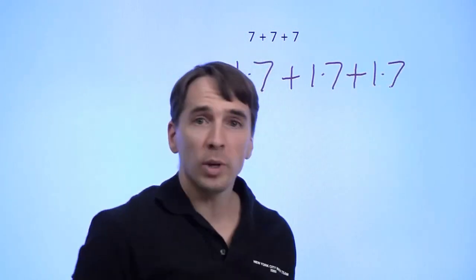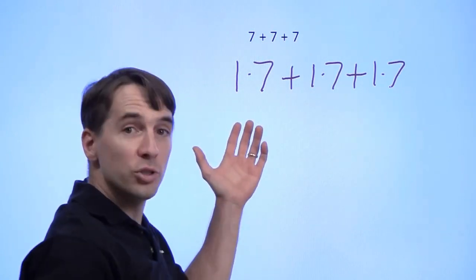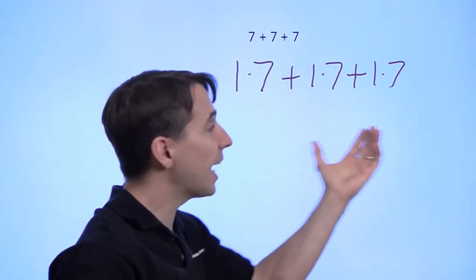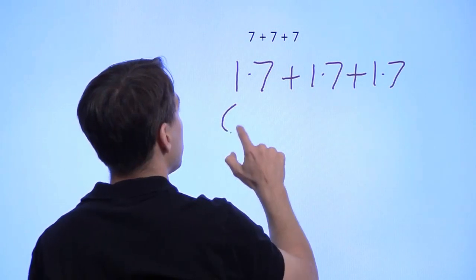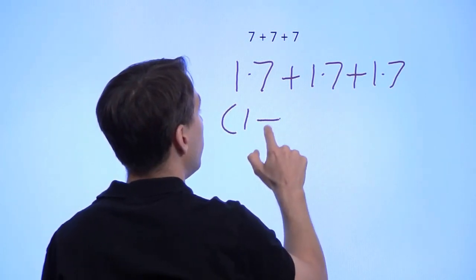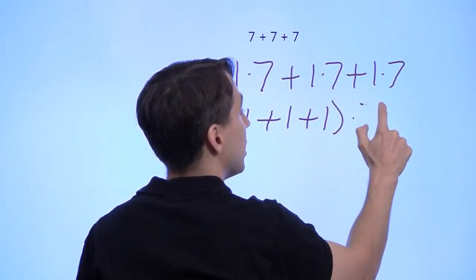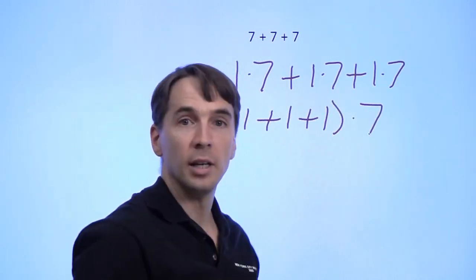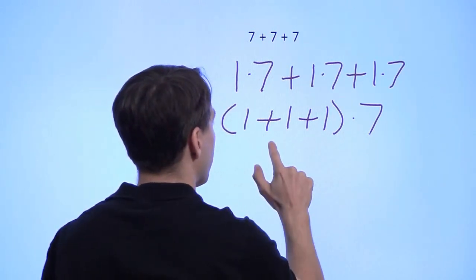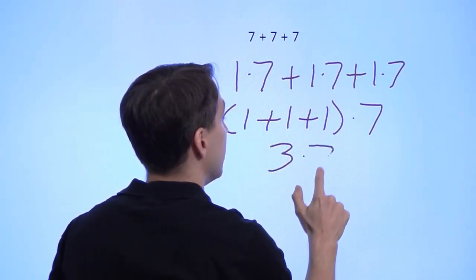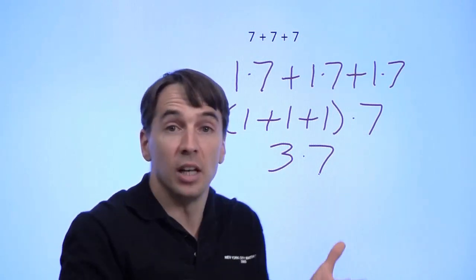Now that we have a sum of products here, we can use the distributive property. We can factor out the 7 and write this sum as 1 plus 1 plus 1 times 7. 1 plus 1 plus 1 — that's where our 3 comes from. And now we see that 7 plus 7 plus 7 is 3 times 7.